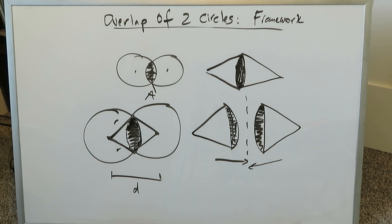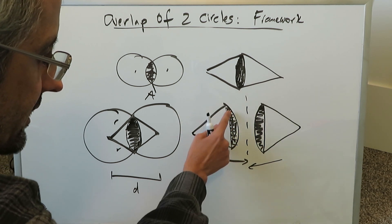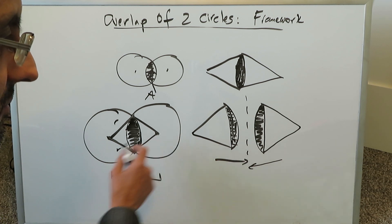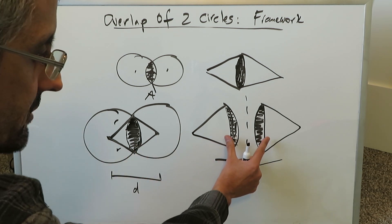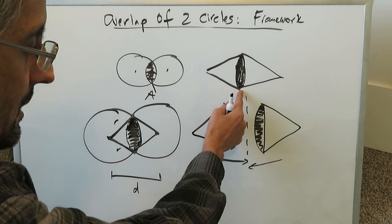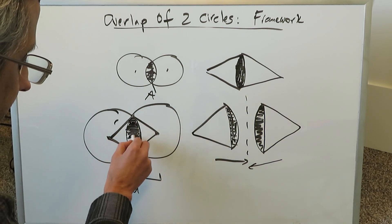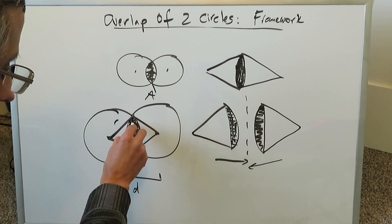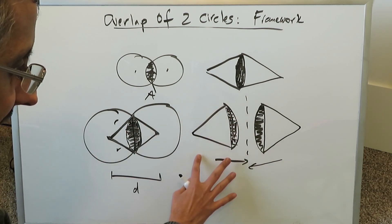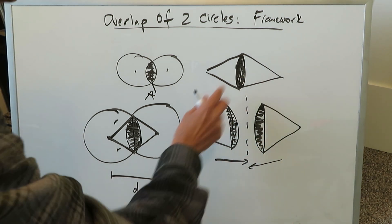The entire framework depends on looking at only a single instance of a sector with its triangle and its shaded region. Once you can determine the area of that single shaded region, all you have to do is multiply by two. I've shown you two shaded regions combined to give the complete overlap. We cut this complete overlap in half, examine a singular half, then multiply everything by two to get the complete picture.